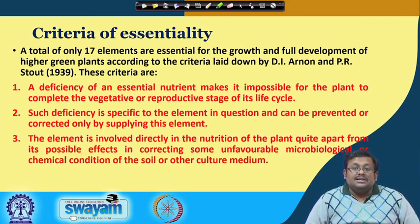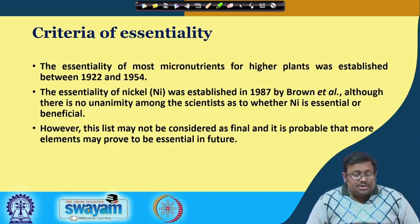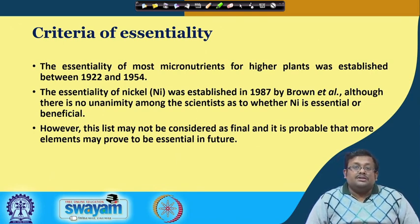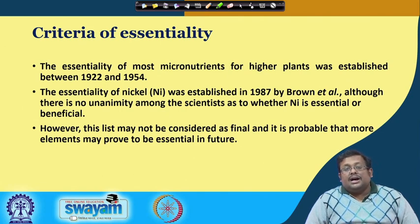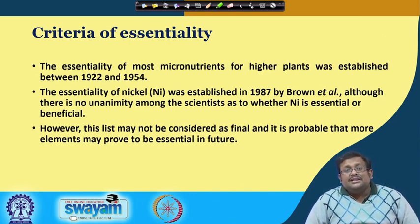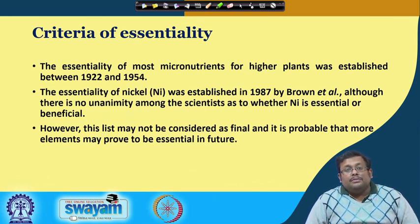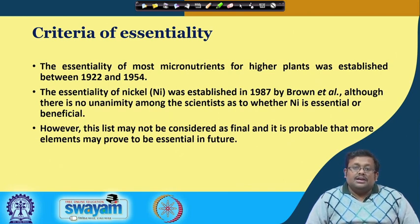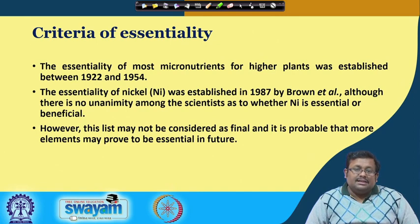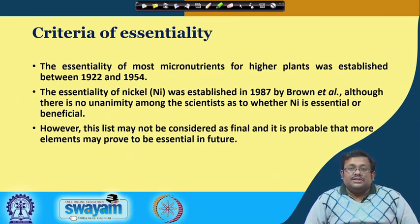Based on these three criteria, we have selected 17 elements as essential plant nutrients. The essentiality of most micronutrients for higher plants was established between 1922 to 1954. The essentiality of nickel, the latest established essential nutrient, was established in 1987 by Brown et al., although there is no unanimity among scientists as to whether nickel is essential or beneficial. The list may not be considered final, as more elements may prove to be essential in future.